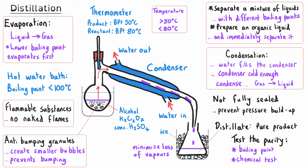Exam questions might show you a diagram of a distillation and ask you to identify mistakes and explain problems they could cause. One really common problem is the water going in and out the wrong way round. In that instance, you would need to say the water would not fill the condenser properly, so the condenser would not be cold enough to ensure the gas fully condenses, and so the yield would be reduced. You can see from the diagram that a condenser is only about 50% filled with water when water enters at the top. When water goes in at the bottom, the cooling jacket is fully filled, ensuring efficient cooling of the vapors.